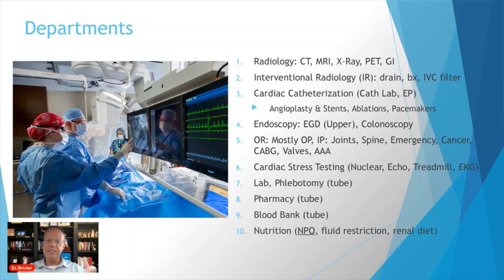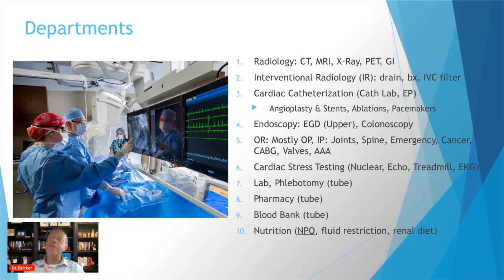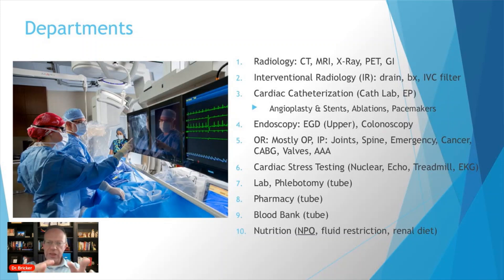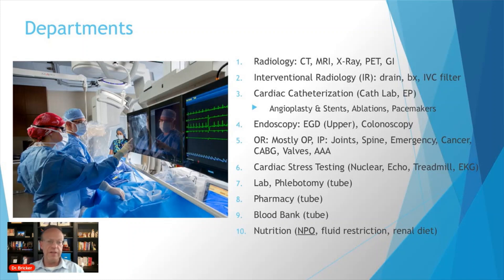When people have what's referred to as a DVT — a deep vein thrombosis, which is a blood clot in their legs — it breaks off and then goes to the lungs, which is referred to as a pulmonary embolism, and that is potentially lethal. People die from pulmonary embolisms. Not everybody who has a DVT requires an IVC filter, but the filter in the large vein of the abdomen catches blood clots before they travel further to the lungs, preventing the pulmonary embolism. That's a common procedure done by the interventional radiologist.